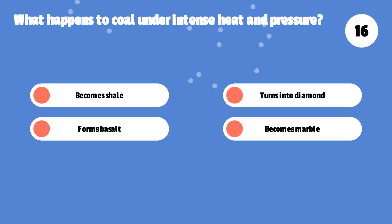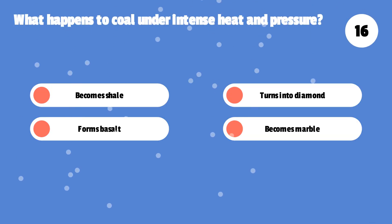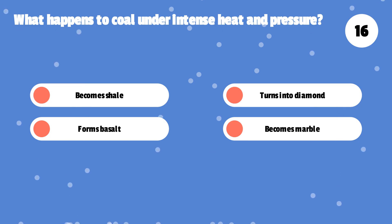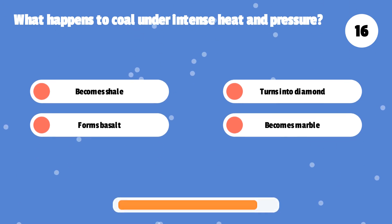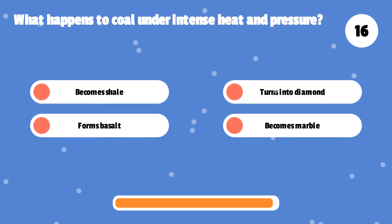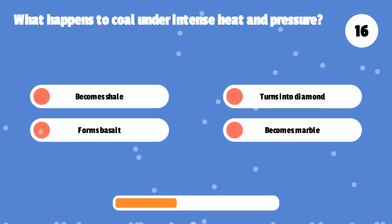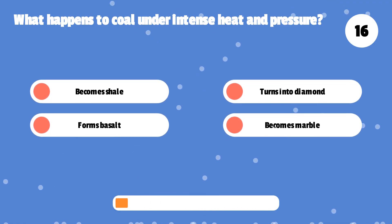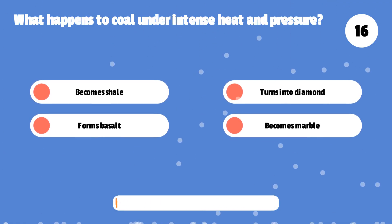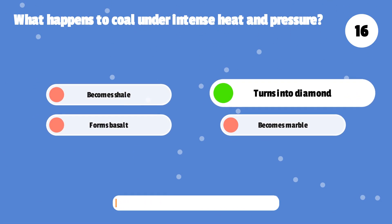What happens to coal under intense heat and pressure? It becomes shale, turns into diamond, forms basalt, or becomes marble? Turns into diamond.